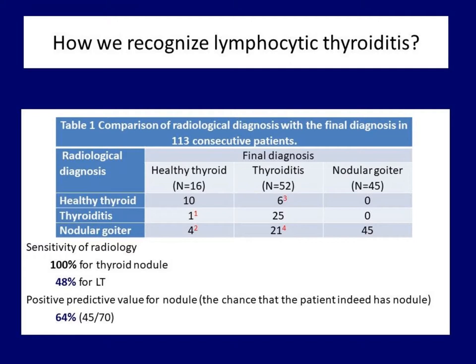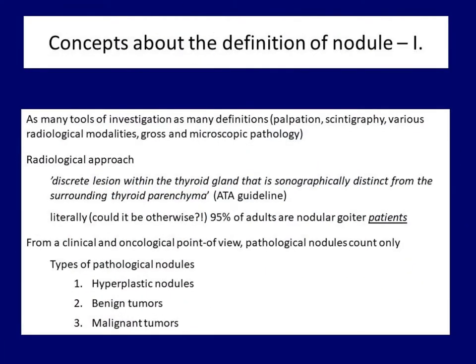The positive predictive value was only 64% for nodules, meaning that in more than a third of cases when the radiologist diagnosed a nodule, it was indeed a false diagnosis. This is the very essence of the most important and most frequent problem faced by the clinician. At least one-fifth of all patients entering the thyroid unit come with a false diagnosis, and many of them also require psychological care to resolve their unnecessary anxiety. The effort spent on this cannot and should not be saved, but at the same time it takes extra time. Now it is the time to apologize to the radiologists.